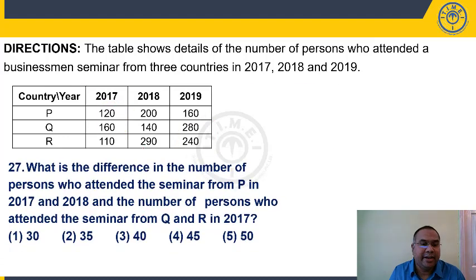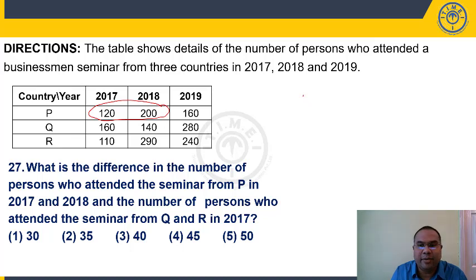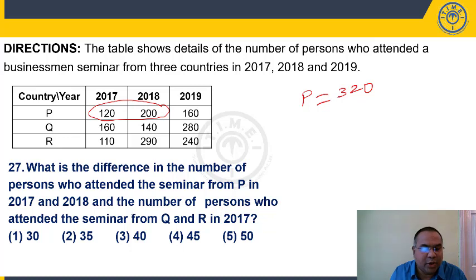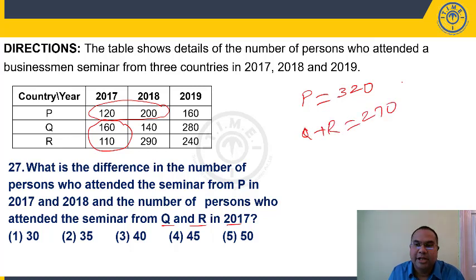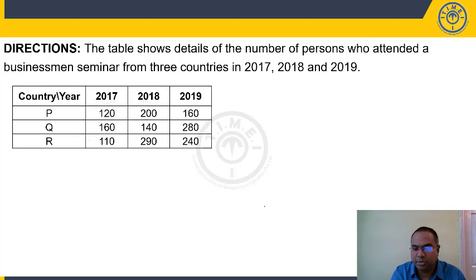Question 27: Difference between persons from P in 2017 and 2018 together (120+200=320) and persons from Q and R in 2017 (160+110=270). Difference = 320 − 270 = 50. Answer: choice 5.